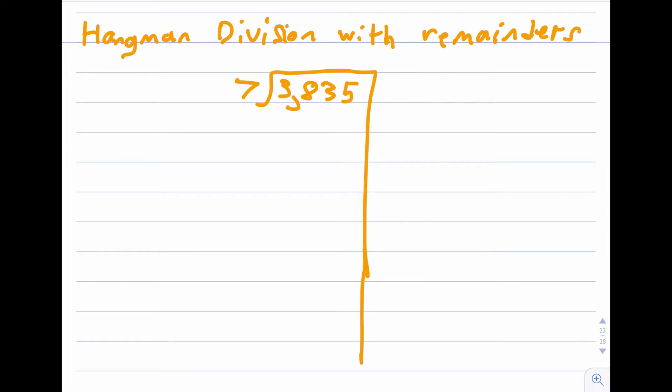Today we are going to be teaching you Hangman's Division with Remainders. The problem today is 3,835 divide by 7. Go ahead and write that down.